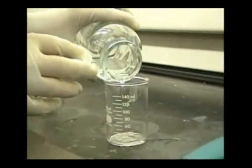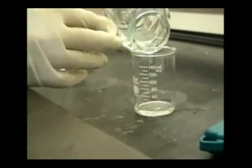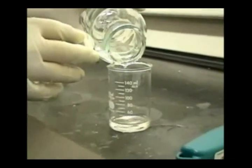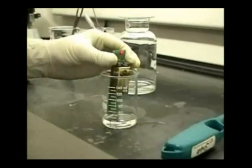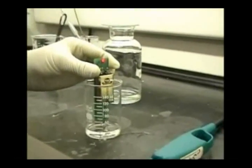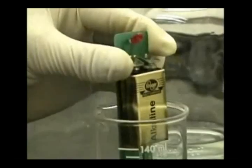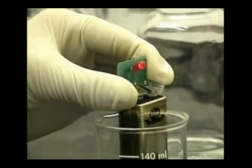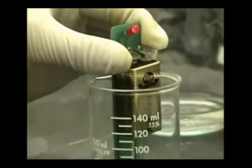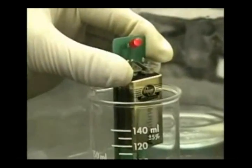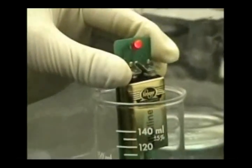We are now transferring the acid rain into a smaller beaker in order to test the conductivity. As you can see, the acid rain is very conductive. The light is very bright, signifying a very conductive liquid.